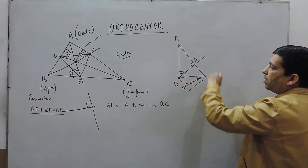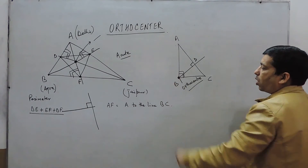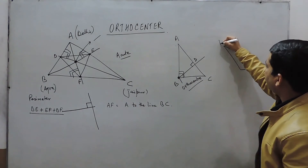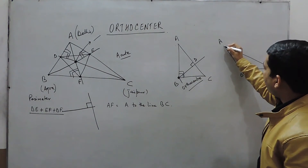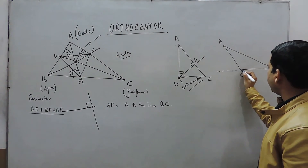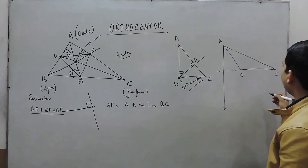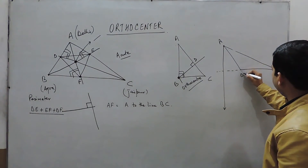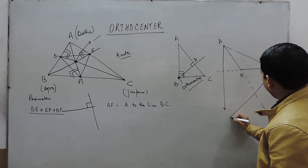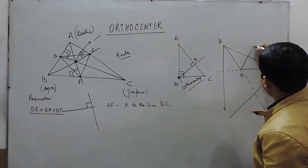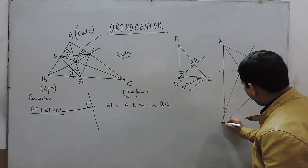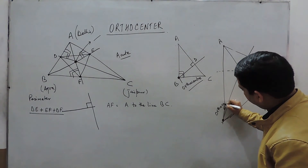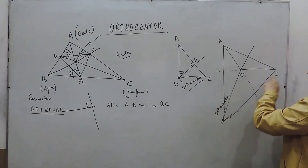So in a right angle triangle, the orthocenter is always a vertex. Now if we talk about an obtuse angle triangle, from point A I want a perpendicular line on BC — it is something like this. From point C, if I want a perpendicular line on AB, it is like this. All these perpendiculars will pass through a specific point, and this point is known as the orthocenter of triangle ABC.